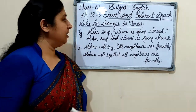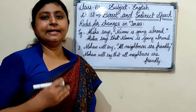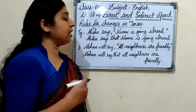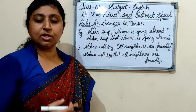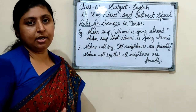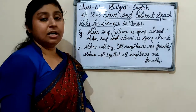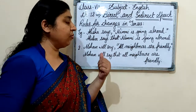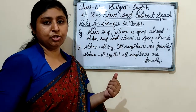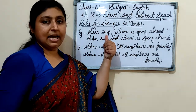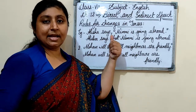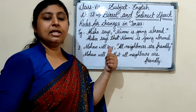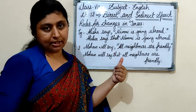Now we will see the rules for changes in tenses. What changes happen in tenses? We will look at the rules. The reporting verb — words like says, said, told — these are called reporting verbs. And the statement is what is reported, the exact words of the speaker placed in quotes.